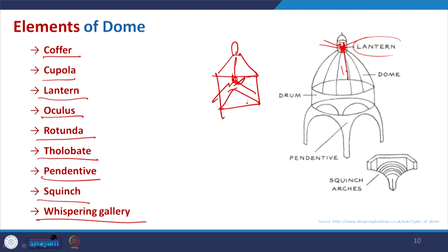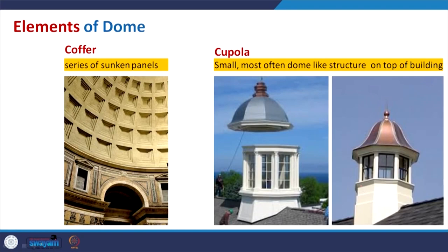The cupola is similar — basically when a dome is to be placed on a cylindrical part, this is the drum shape. Then, whenever you have to place a different kind of dome on a square base, you have to make changes at that junction — that is where pendentive and squinch arches are formed.